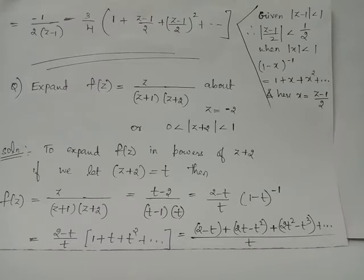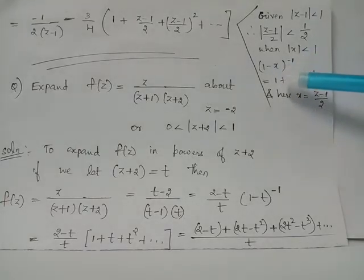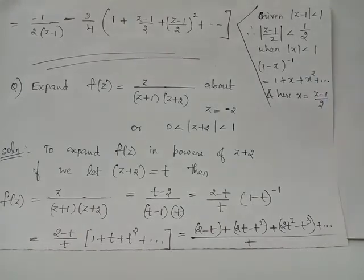We expand (1 minus t) to the power minus 1 using the identity: (1 minus x) to the power negative 1 equals 1 plus x plus x squared plus x cubed plus etc. Therefore we obtain (2 minus t) over t, multiplied by (1 plus t plus t squared plus t cubed plus etc).